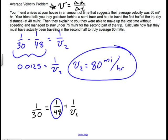It says then they explained to you that they were able to make up the lost time after being stuck behind the semi without speeding and managed to stay under 75 miles per hour for the second part of the trip. Calculate how fast they must have actually been traveling. That is what we've just done here. So this would be a mathematical proof to show that actually they did indeed have to go faster than 75 miles per hour in order to truly average this speed that was given up here.